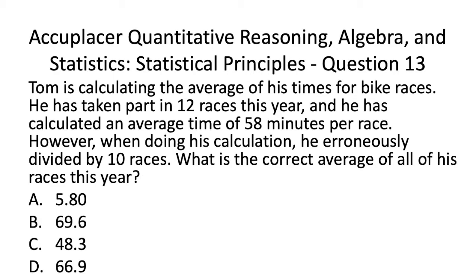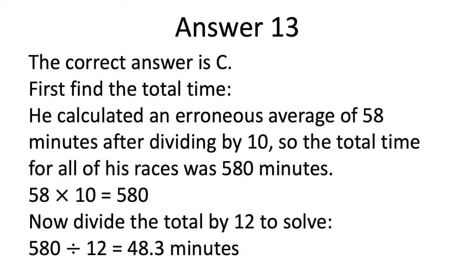Let's have a look at Acuplacer QAS Statistics Practice Test Question 13. The correct answer is C. First, find the total time. He calculated an erroneous average of 58 minutes after dividing by 10, so the total time for all his races was 580 minutes — found by multiplying 58 by 10. Now divide the total by 12 to solve: 580 divided by 12 gives us the average of 48.3 minutes.